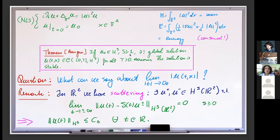Another remark: the original proof of Bourgain was done on the square torus — basically a rational torus — but after the Strichartz estimates were proved for any torus by Bourgain and Demeter in 2014, the same proof that Bourgain gave at the beginning goes through.